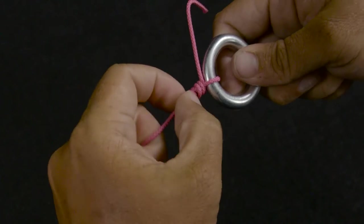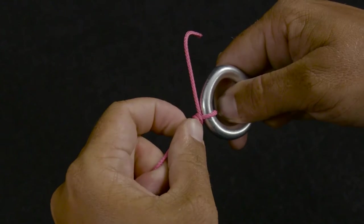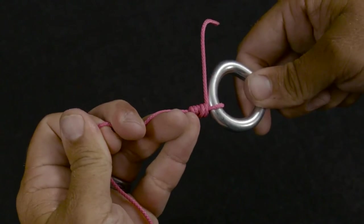So when your knot's all finished, that's what it should look like right there, and that's going to bunch down. The harder you pull on that, the tighter it's actually going to get, so it's going to cinch down right up against there.